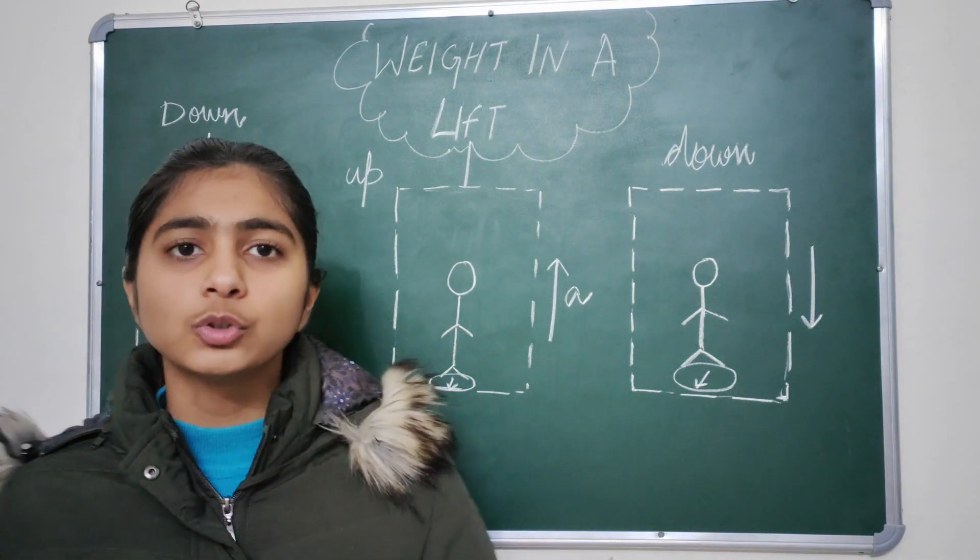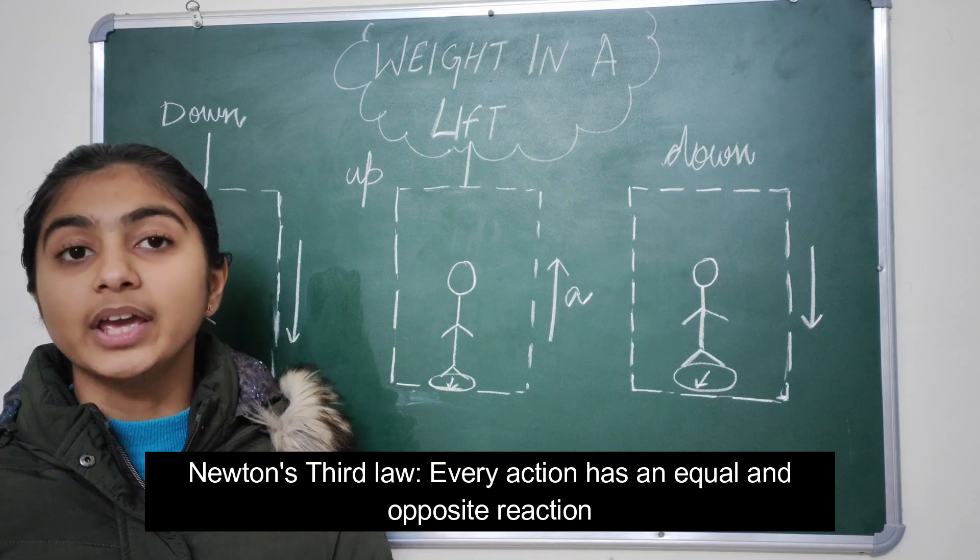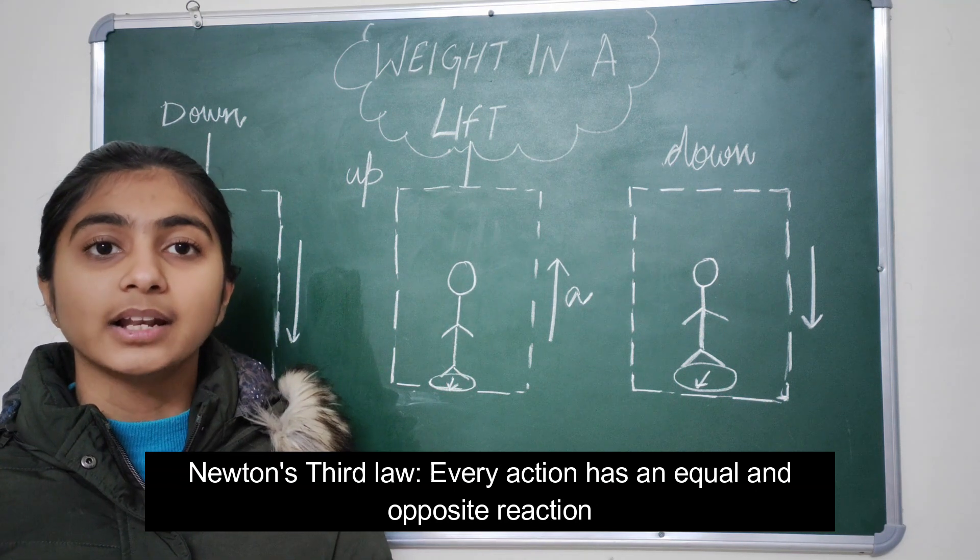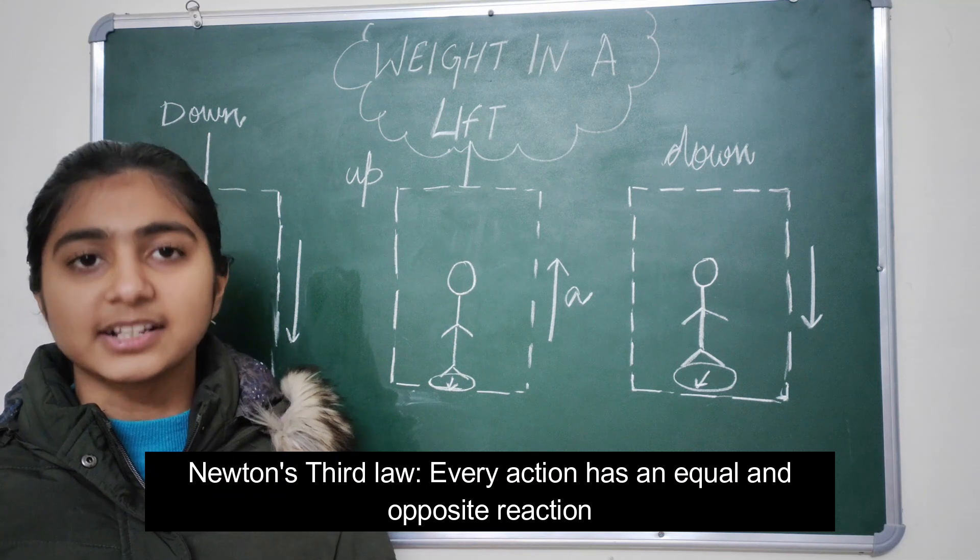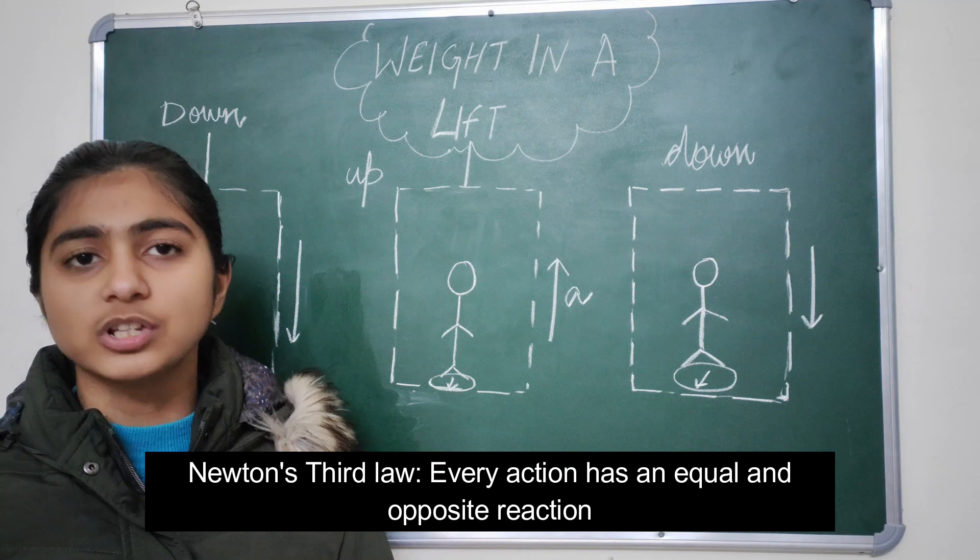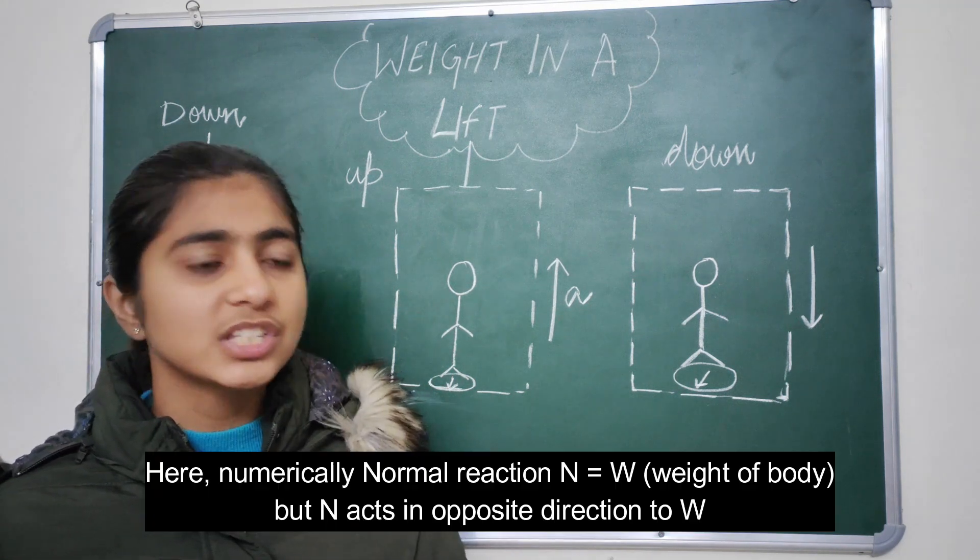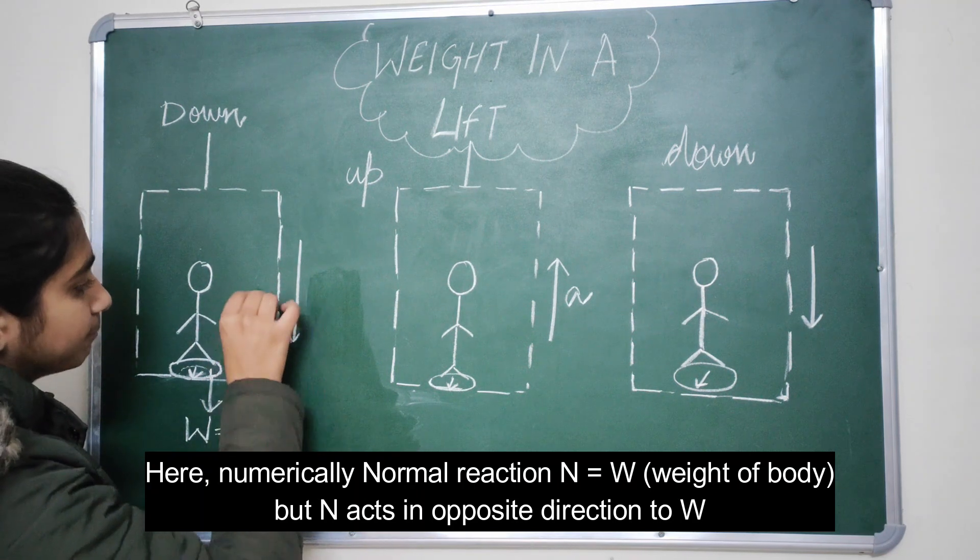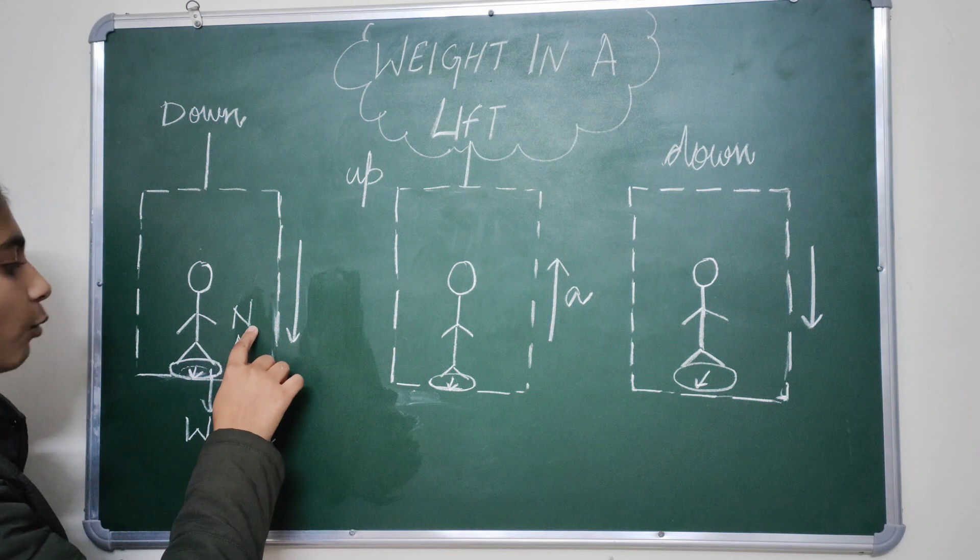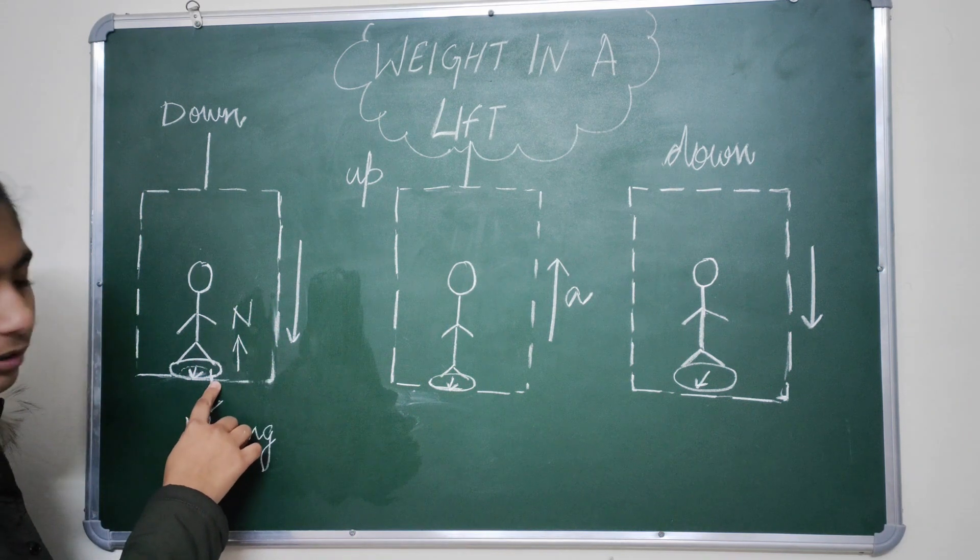At the same time, you also know that by the third law of Newton, if a weight or a force acts in some direction, there is a force that counteracts it, means it acts in the opposite direction and it is equal in magnitude. In this case, we see that force as the normal reaction, which in turn gives us the weight on the weighing machine.